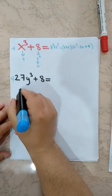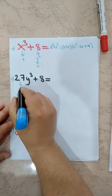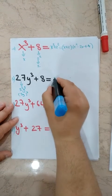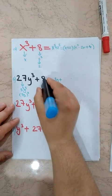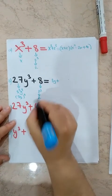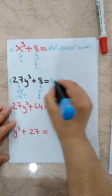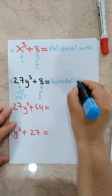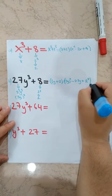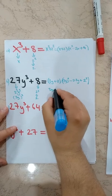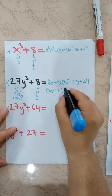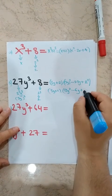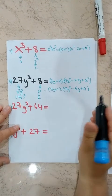Next: 27Y cubed plus 8. Which number cubed is 27? — 3 cubed, so first term is 3Y. Which number cubed is 8? — 2 cubed, so second term is 2. We write 3Y plus 2 times 3Y squared minus 2 times 3Y plus 2 squared. In standard form: 3Y plus 2 times 9Y squared minus 6Y plus 4. This is the expanded form of this sum of two cubes.